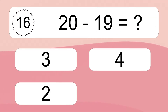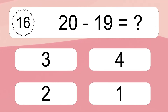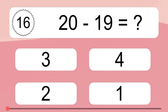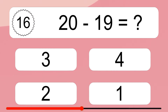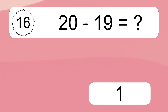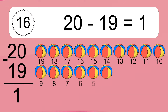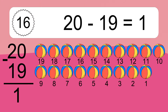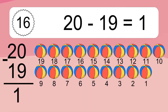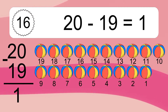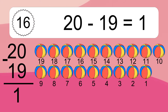20 minus 19 equals what? 20 minus 19 equals 1. Let's count it: 19, 18, 17, 16, 15, 14, 13, 12, 11, 10, 9, 8, 7, 6, 5, 4, 3.